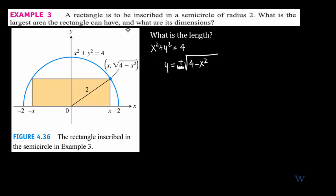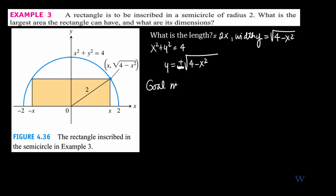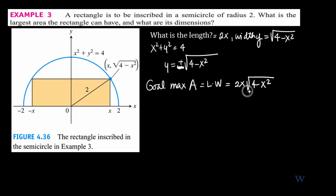We want the largest area of the rectangle. The length of the rectangle is 2x, and the width is y, which equals the square root of 4 minus x². Our goal is to maximize the area, which is length times width: 2x times the square root of 4 minus x². The area is already a function of one variable, so no substitution is needed.